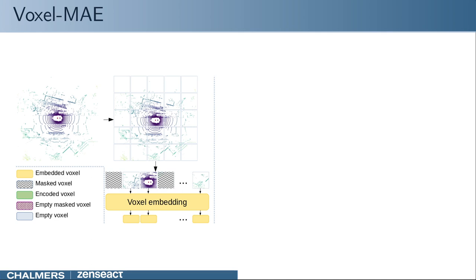Next, among the non-empty voxels, we mask out 70% and replace these voxels with a learnable mask token. The remaining voxels are embedded with a voxel feature encoder.